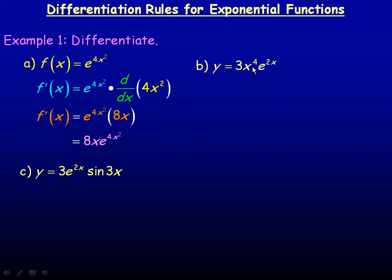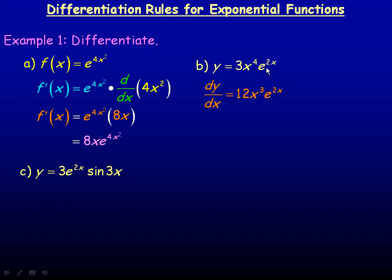In example B, this is really a product. 3x to the 4th is one function, and e to the 2x is another, so I'm going to use the product rule. In product rule you differentiate one of the functions — I'm going to differentiate 3x to the 4th, which would be 12x cubed by the power rule — and we multiply that by the second function.